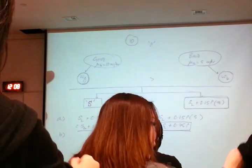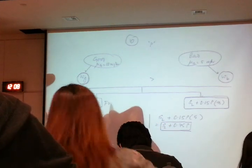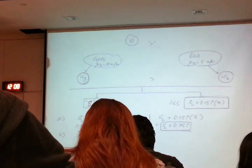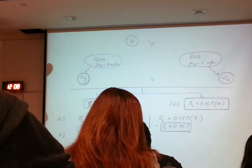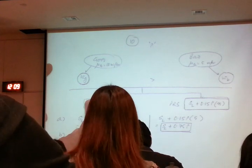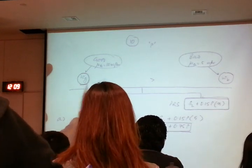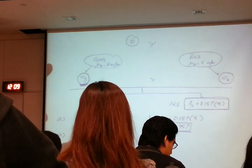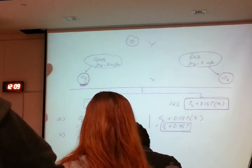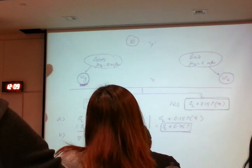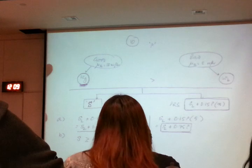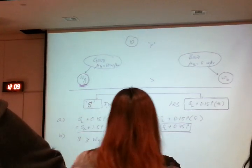Under the fixed wage scheme, what is the minimum salary the employer needs to pay to attract good workers? To get a good quality worker to apply, the wage must be higher than what they can earn elsewhere. If it is lower than WG, the good quality worker will not apply. Therefore, S must be greater than or equal to WG. The minimum the employer needs to pay is WG.